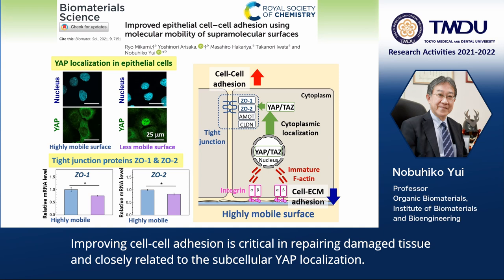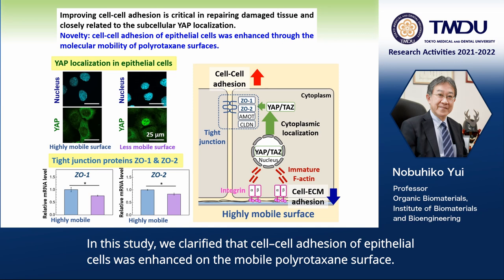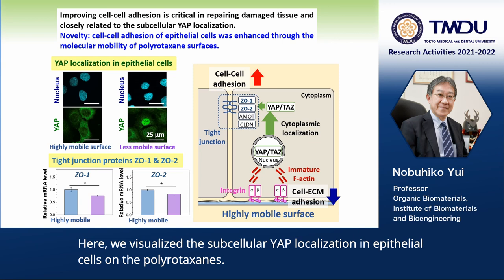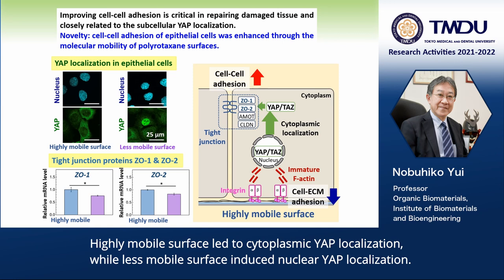Improving cell-cell adhesion is critical in repairing damaged tissue and closely related to the subcellular YAP localization. In this study, we clarified that cell-cell adhesion of epithelial cells was enhanced on the mobile polyrotaxane surface. Let me show you some of the typical results. Here, we visualized the subcellular YAP localization in the epithelial cells on the polyrotaxanes. Highly mobile surface led to cytoplasmic YAP localization,